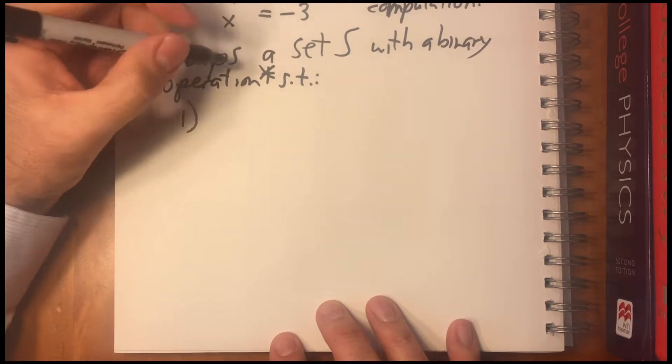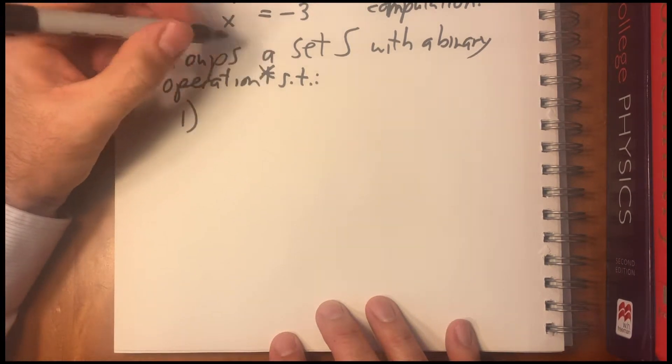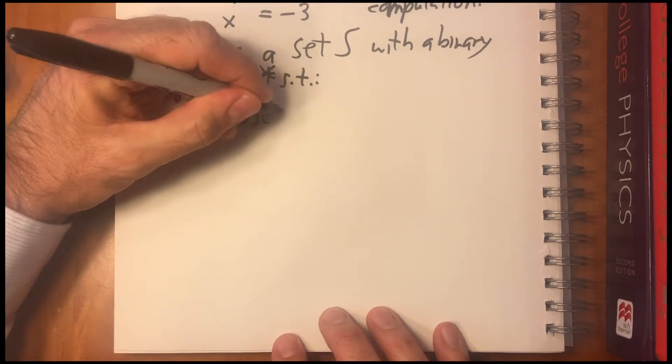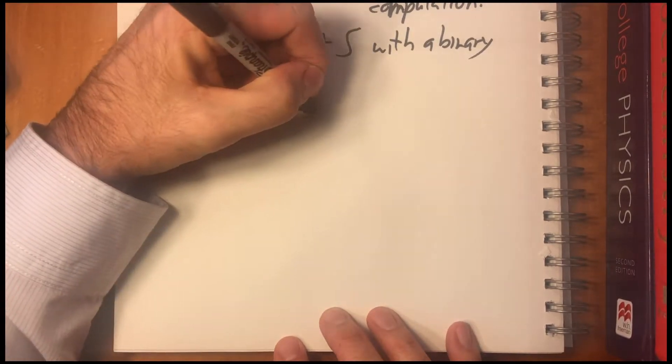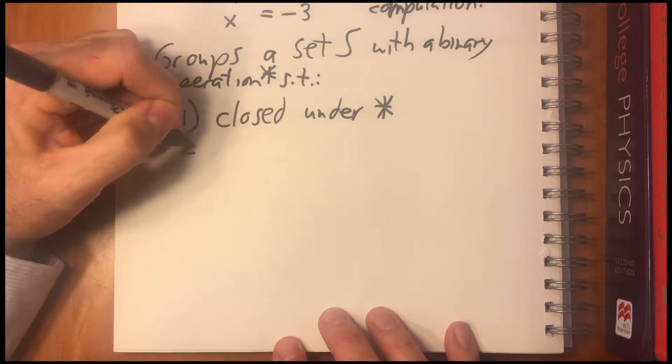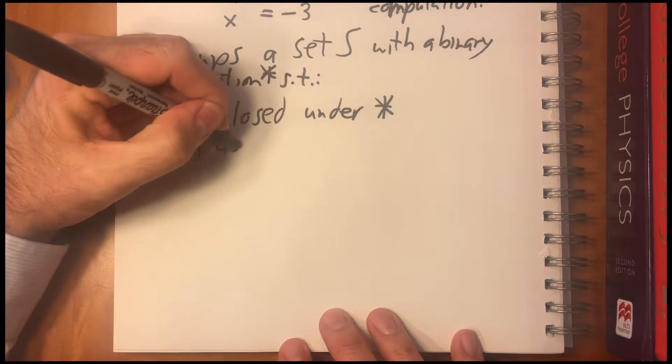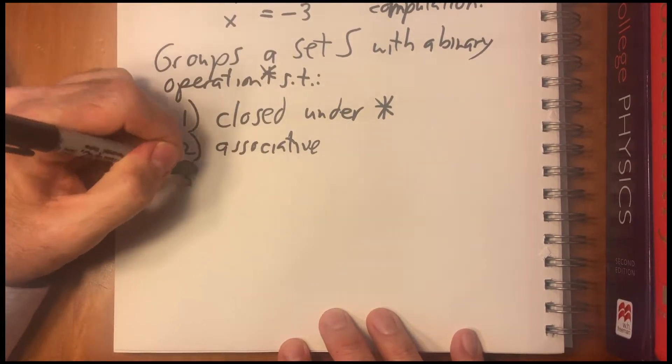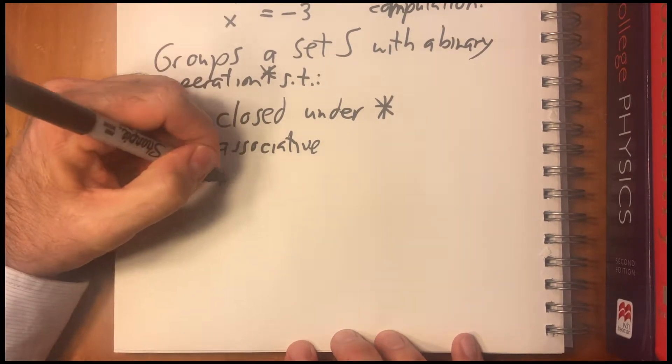So one, the operation is closed, or that the set s is closed under the operation. Two, the operation is associative. Three, there's an identity element.